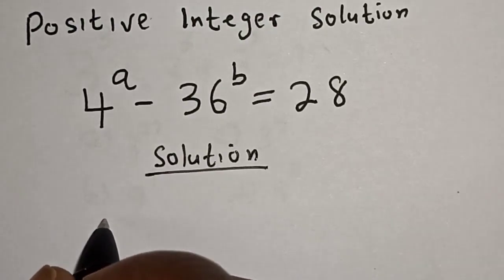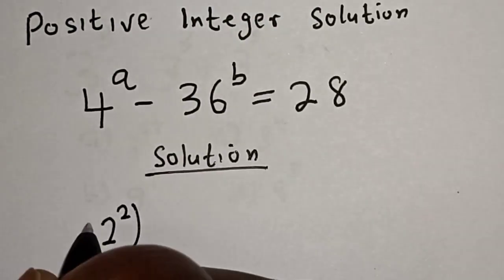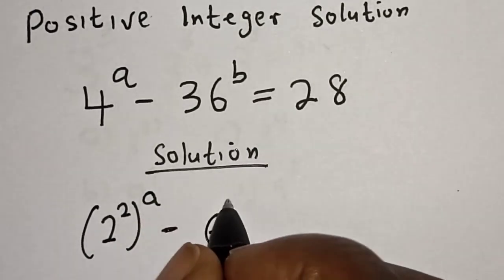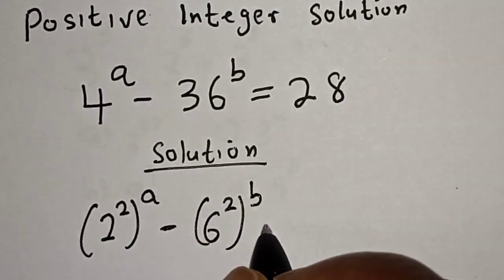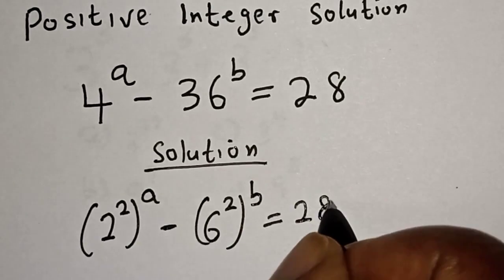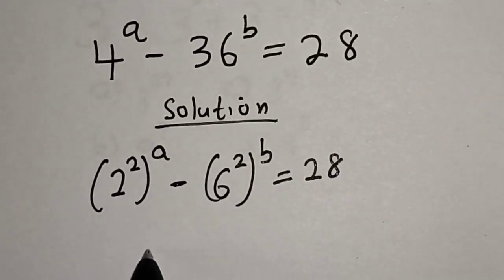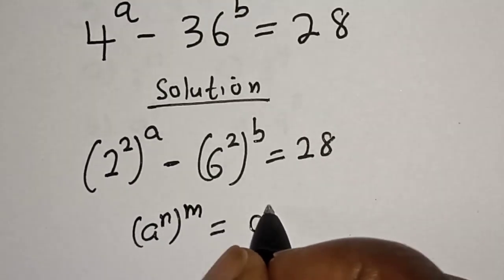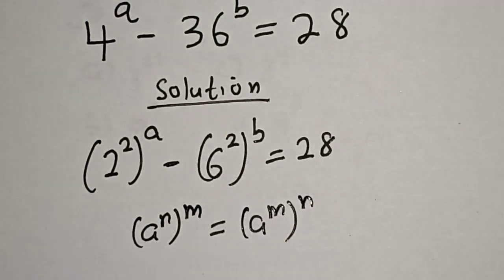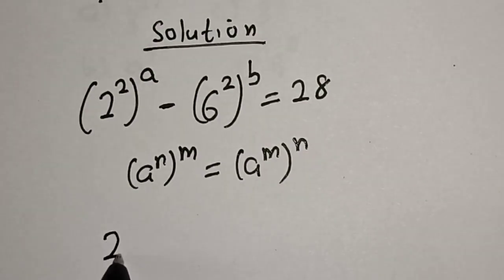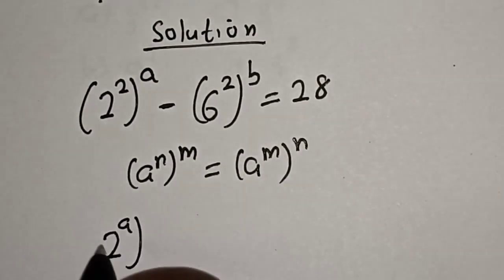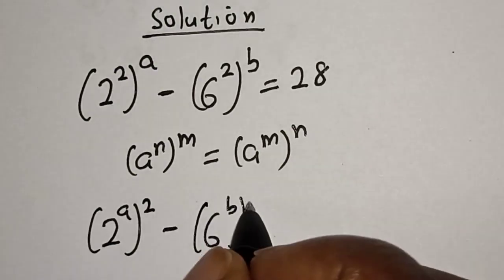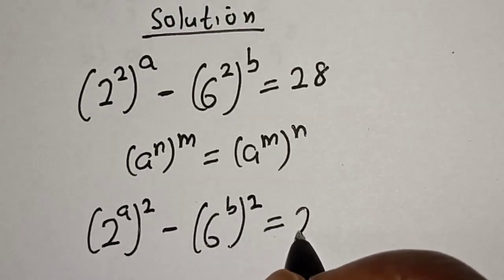4 to the power of a can be written as 2 squared raised to the power a, minus 36 to the power of b which can be written as 6 squared raised to the power b, is equal to 28. Remember the rule that a raised to power n, to the power of m, equals a raised to power m times n. So this becomes 2 raised to power 2a minus 6 to the power of 2b, equal to 28.